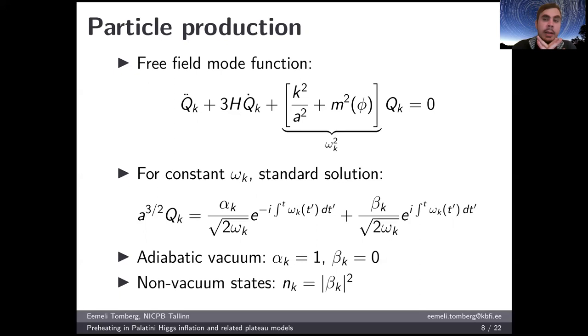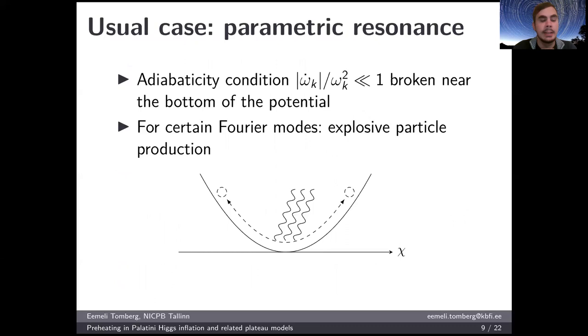However, if this ω_k evolves in time rapidly, then there might be a shift between this α and β, so that at the later adiabatic period, this β is non-zero and this β actually then characterizes the number of produced particles. This particle production takes place in our case because we assume that these interesting fields are coupled to the inflaton. They have a mass term which depends on this inflaton field. So that when the inflaton oscillates, this mass and this ω_k² also changes. This leads typically to parametric resonance, so that this adiabatic condition is broken especially near the bottom of the inflaton potential. And this then leads to amplification and explosive particle production for certain k modes. So this is the usual story.